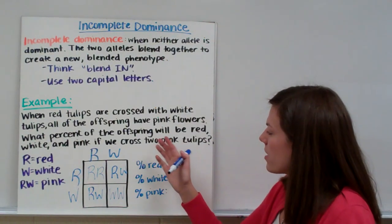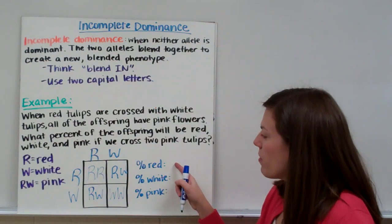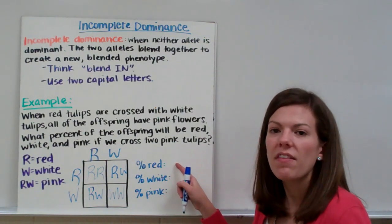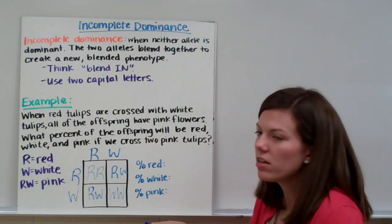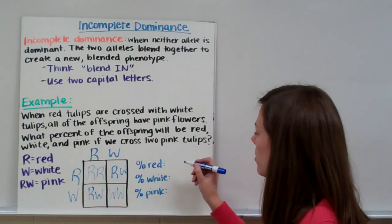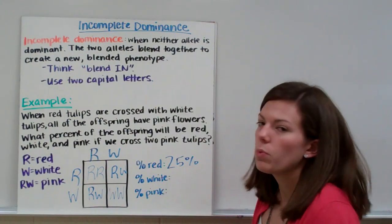It's asking what percent of the flowers are going to be red, white, and pink. For our red flowers, we want to find the flowers that only have an R. We have one with just two R's - the other ones have a W. So one out of four is 25%, so 25% of the offspring tulips will be red.